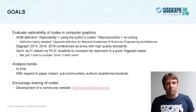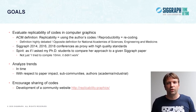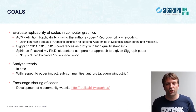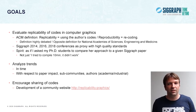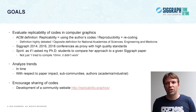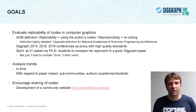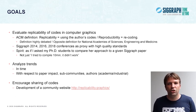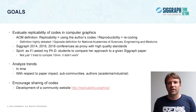So we have three main goals as well, which is to evaluate the replicability of code in computer graphics. Just to be clear, we will be using the ACM definition of replicability, which is based on using the author's code, as opposed to reproducibility, which implies reimplementing everything. And this definition is highly debated. There is a more consensual definition used by the National Academies of Sciences, Engineering and Medicine that is opposite to this one.